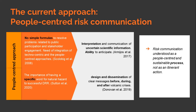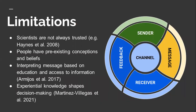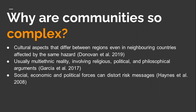There are some important limitations when communicating, and many of them are related to the receiver and the need for feedback. For instance, scientists are not always trusted. People may have pre-existing conceptions and beliefs. They can interpret the message based on education and access to information, and experiential knowledge shapes decision-making. Communities are complex due to cultural aspects that differ between regions, even in neighboring countries affected by the same hazard. Usually there is a multi-ethnic reality involving religious, political, and philosophical arguments, and social, economic, and political forces that can distort the risk message.